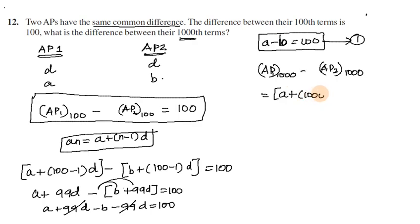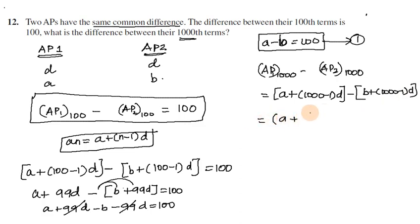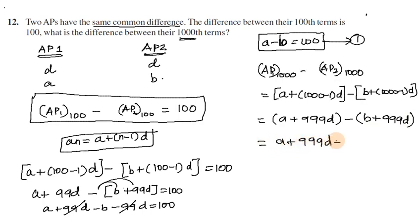Now for the 1000th terms: AP 1's 1000th term is A plus 999D, and AP 2's 1000th term is B plus 999D. Taking the difference: (A + 999D) minus (B + 999D). The 999D terms cancel, so the answer is A minus B.